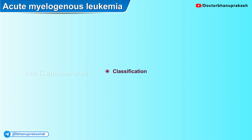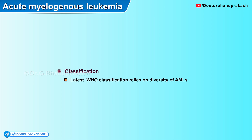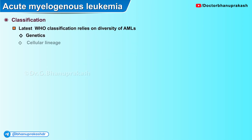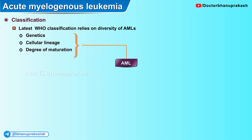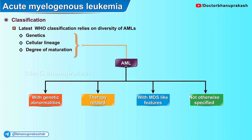The classification of acute myelogenous leukemia. The latest WHO classification relies on diversity of acute myelogenous leukemias in terms of genetics, cellular lineage, and the degree of maturation to divide acute myelogenous leukemia into four different categories. We will compare and contrast the latest WHO guidelines with the previous French-American-British (FAB) system and evaluate the specific features of each variant and the prognosis associated with them.